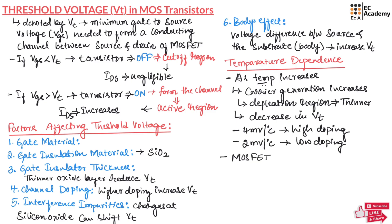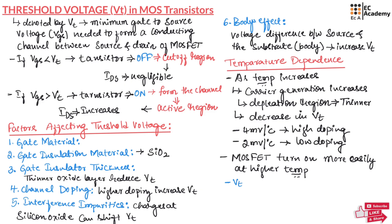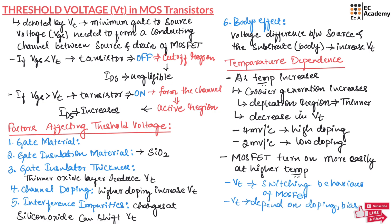We can say the MOSFET will turn on more easily at higher temperature. From this discussion, we understand that threshold voltage is crucial in the switching behavior of MOSFET — it determines how the MOSFET switches on or off. This threshold voltage depends upon doping, bias, and temperature, and all these factors should be controlled during design of the MOSFET.